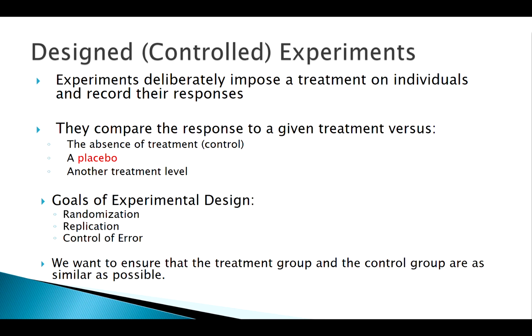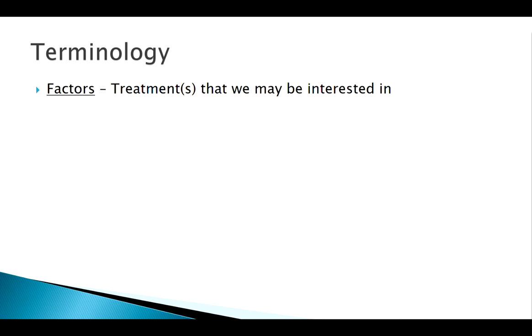Experimental design is fairly straightforward in many cases, but there's a lot of terminology. We're familiar with the idea of a treatment — that's whatever we're testing, whatever people are getting. For more complicated experimental designs, variables or treatments are often called factors, especially if they're categorical. The different values of these factors are called levels.